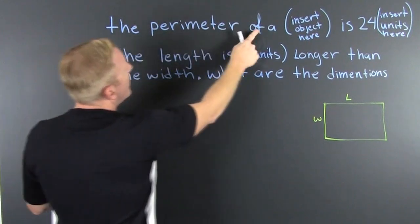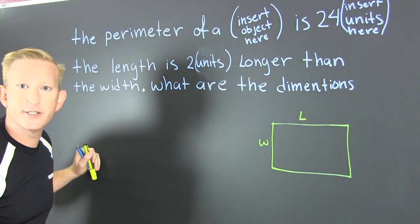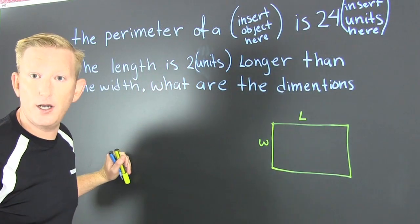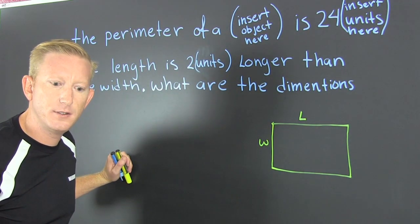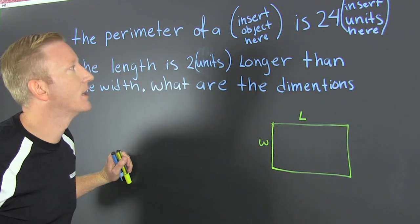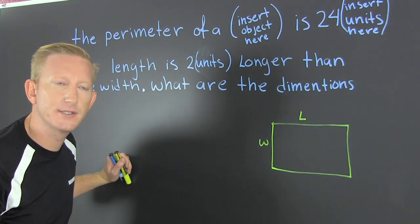The perimeter of an insert object here. It could be a carpet, a rug, a picture frame, a garden, anything that's really rectangular. Alright, all of these problems work the same.